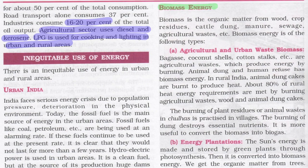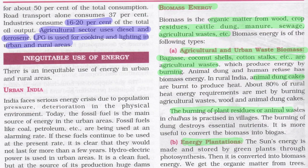Biomass energy is organic matter from wood, crop residues, cattle dung, manure, sewage, agricultural waste, etc. It is of two types: agricultural and urban waste biomass, and energy plantations. Agricultural wastes like bagasse, coconut shells, and cotton stalks produce energy by burning. Animal dung and human refuse also have biomass energy. In rural India, animal dung cakes are burnt to produce heat. Burning of plant residues or animal wastes in chulhas is practiced in villages. However, burning dung destroys essential nutrients, so it is more useful to convert biomass into biogas.